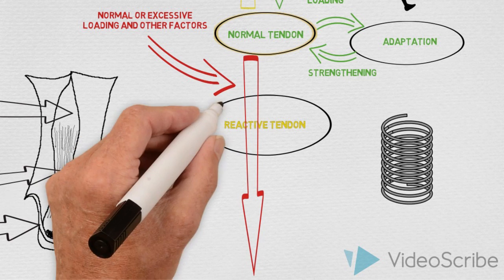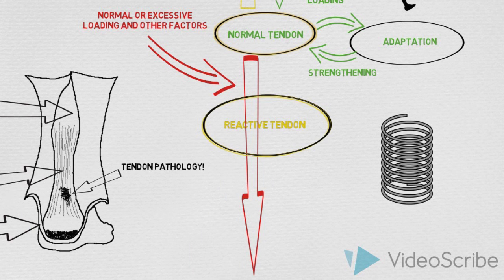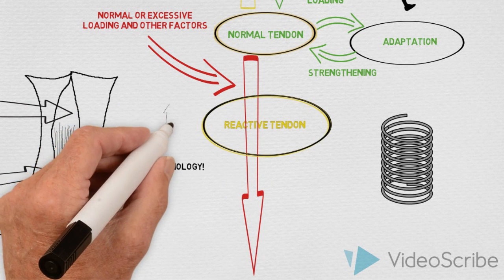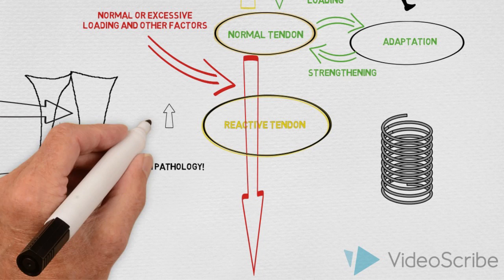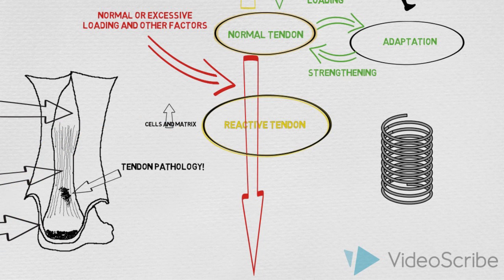The reactive tendon will thicken to try and reduce stress by increasing the number of cells and matrix in the affected portion of the tendon. Although we have stages of tendinopathy, they are not absolute and here are presented as a continuum.